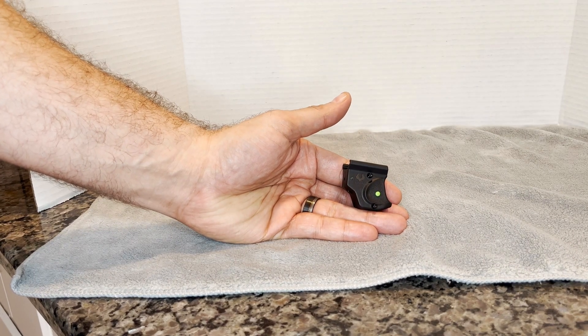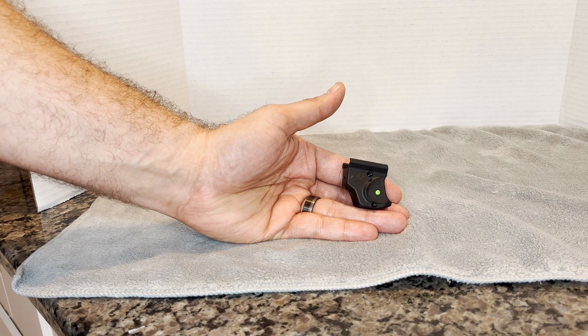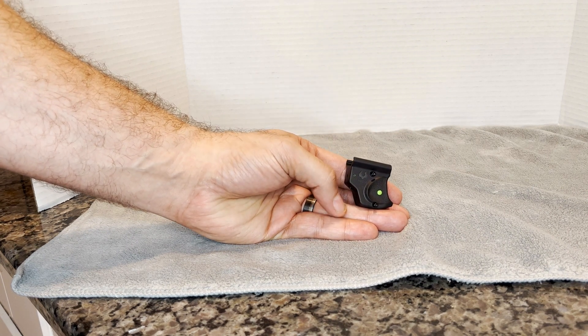This is the Viridian Weapon Technologies E-Series Laser Sight. It's a class 3R green laser sight with a 5 milliwatt output.